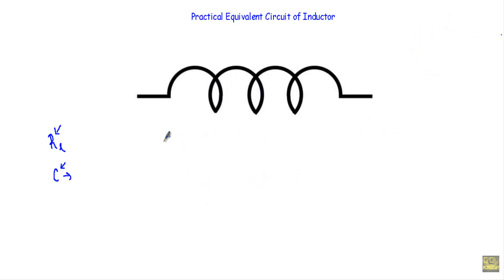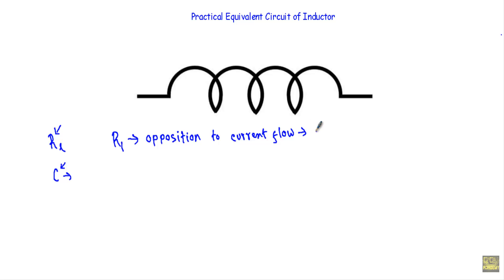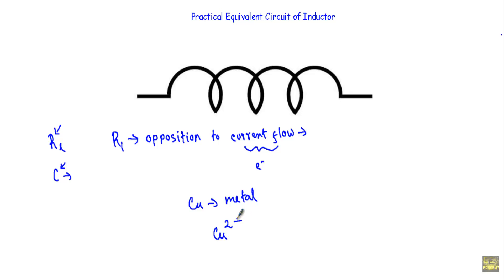Now let me talk about how we get the resistance RL in this inductor. Resistance is defined as the opposition to current flow, and we define current flow by the movement of electrons. This is a copper wire or twisted copper, and as copper is a metal, there is a tendency of metals to lose their valence electrons and stay as positive ions. So our copper atoms will stay as Cu2+ ions everywhere inside the inductor.